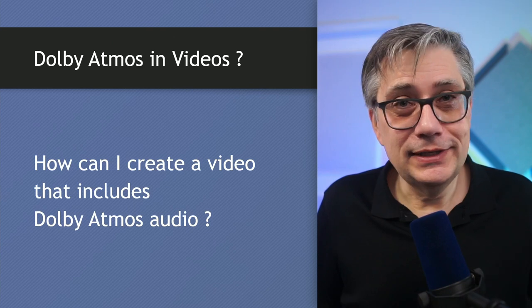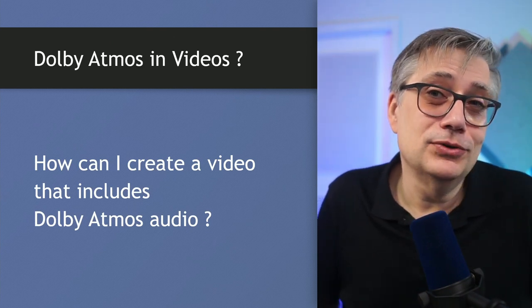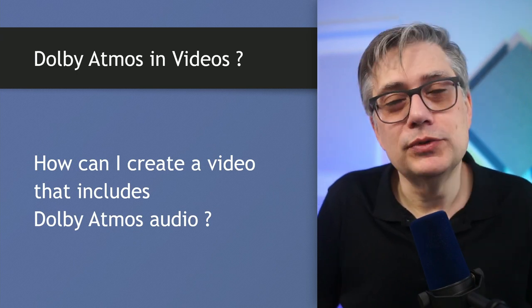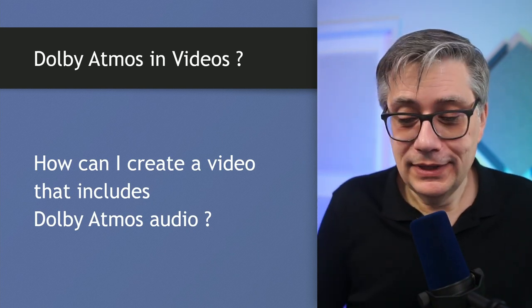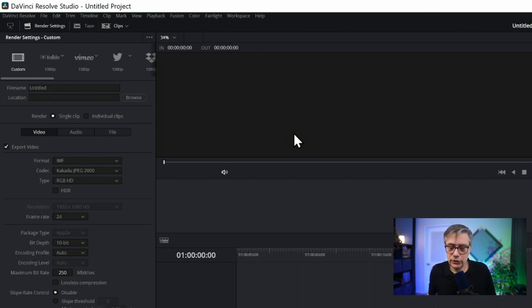The next question is one I get very often, and unfortunately it doesn't have a great answer: how can I create a video that includes Dolby Atmos audio? That's not very straightforward. What Cubase and Nuendo allow you to do is export a Dolby Atmos master file through the renderer, which means the audio will always be disconnected from the video. To create a Dolby Atmos capable video you need particular software — one such option is DaVinci Resolve Studio, the paid version.